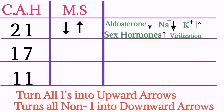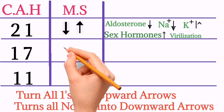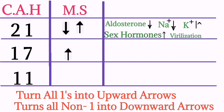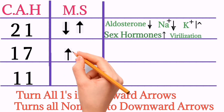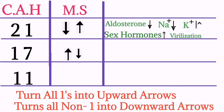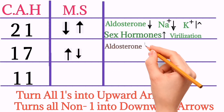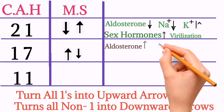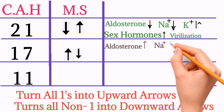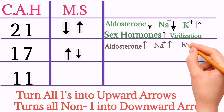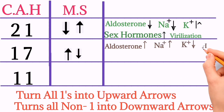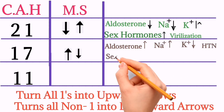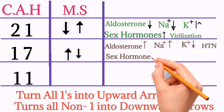In 17-hydroxylase deficiency: 1 gives an upward arrow and 7 gives a downward arrow. So mineralocorticoid — that is aldosterone — will increase, causing sodium to increase and potassium to decrease, leading to hypertension, while sex hormones will be decreased.